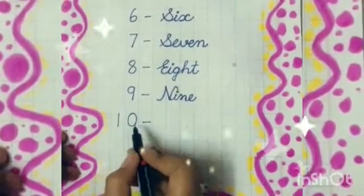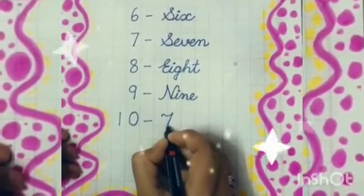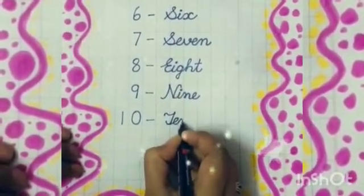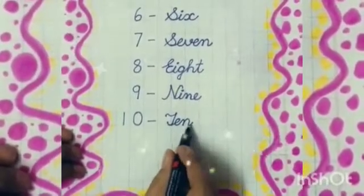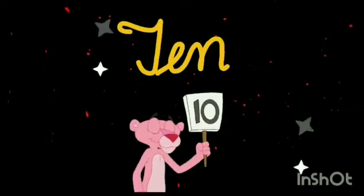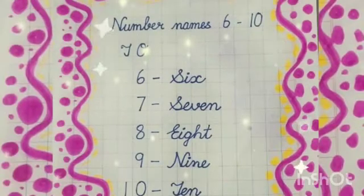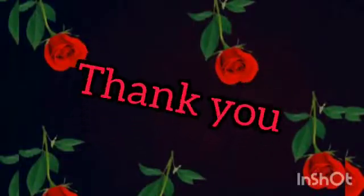N-I-N-E, 9. 10. T-E-N, 10. T-E-N, 10. Now, dear kids, it's a homework for you to learn and write number names from 6 to 10 in your notebook. Thank you. Bye for now.